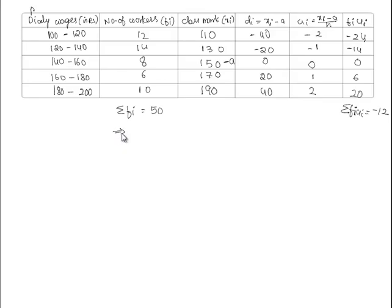Now, as we know ui is equal to xi minus A by h, we shall find the relation between xi and ui. x bar is the mean and u bar can be defined as sigma of fi ui by sigma of fi. Hence, we know that ui is equal to xi minus A by h.